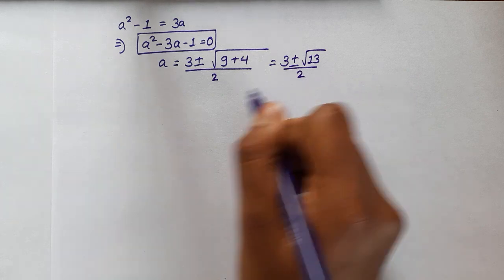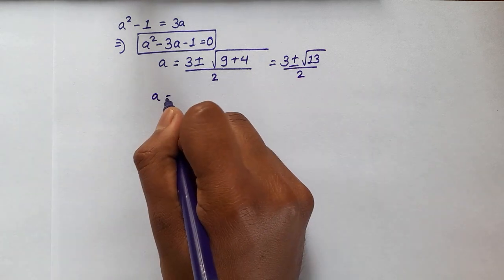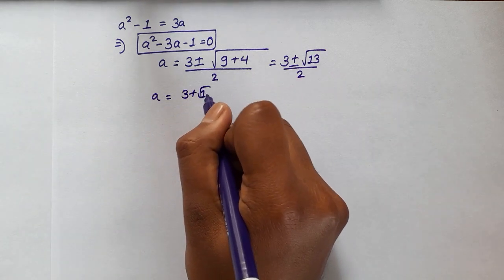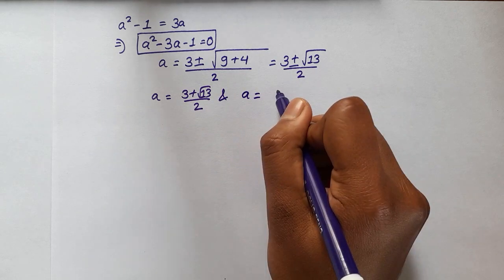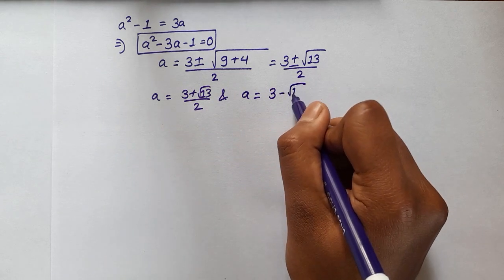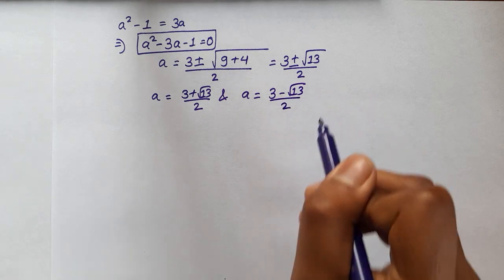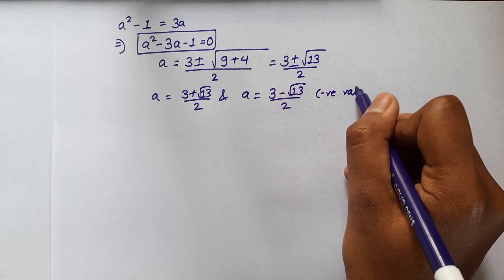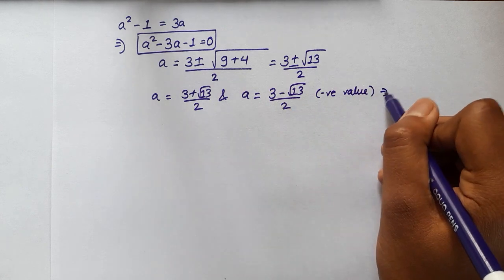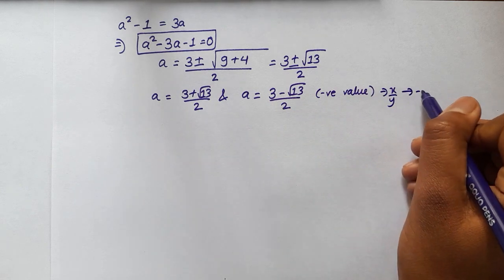So now we have got two values for a. If we take the positive value we will have 3 plus root 13 over 2. And if we take the negative value we will have a is equal to 3 minus root 13 over 2. And this here is a negative value. And this also implies that x over y has to be a negative value.